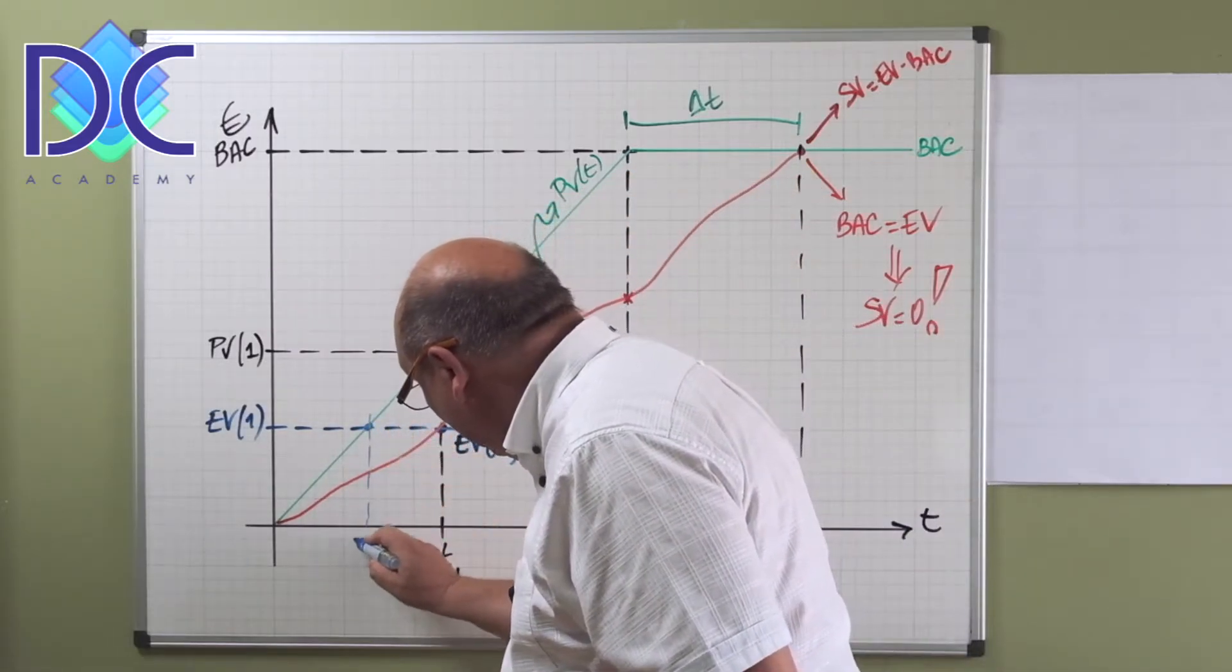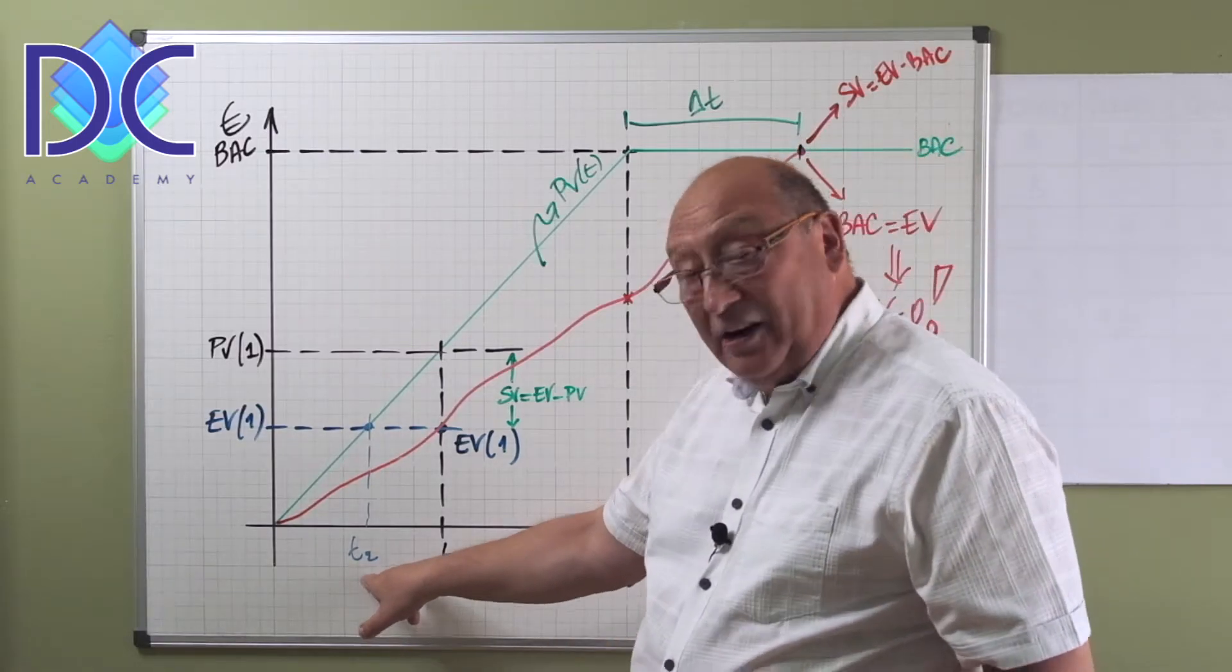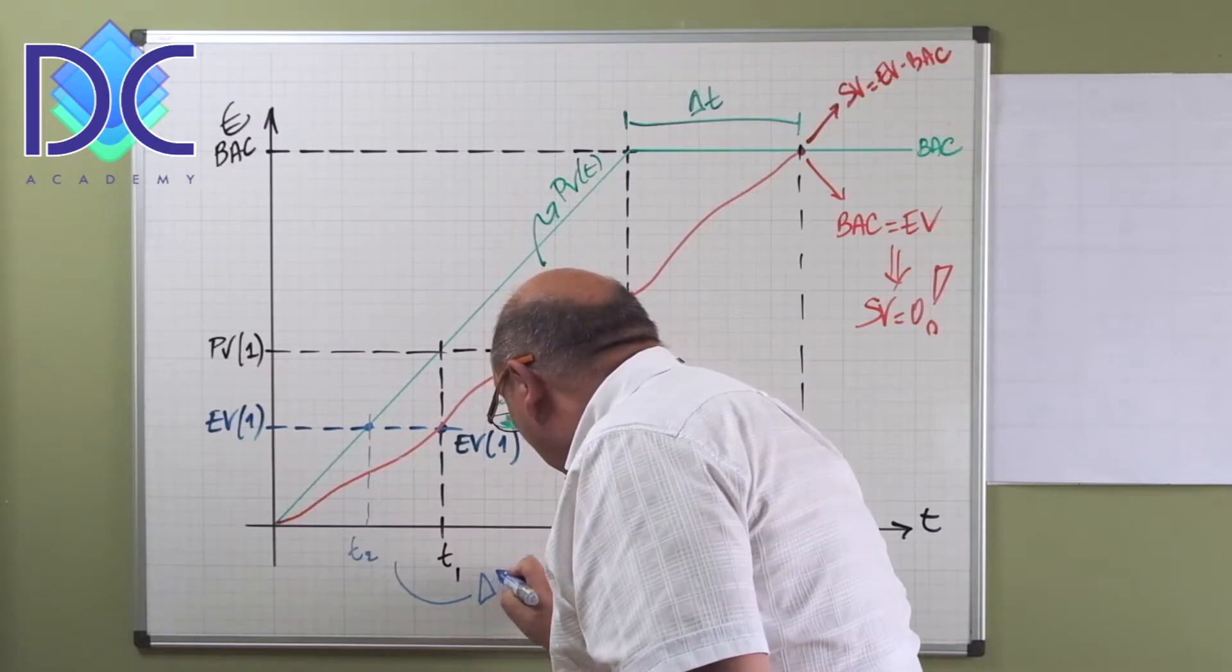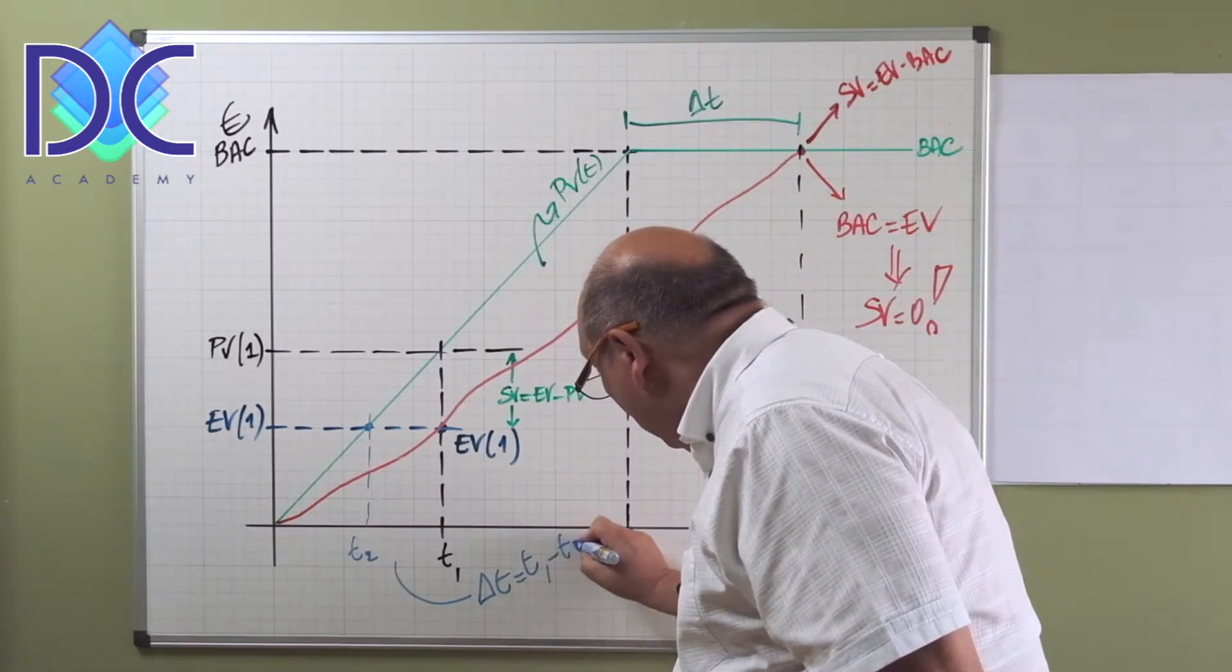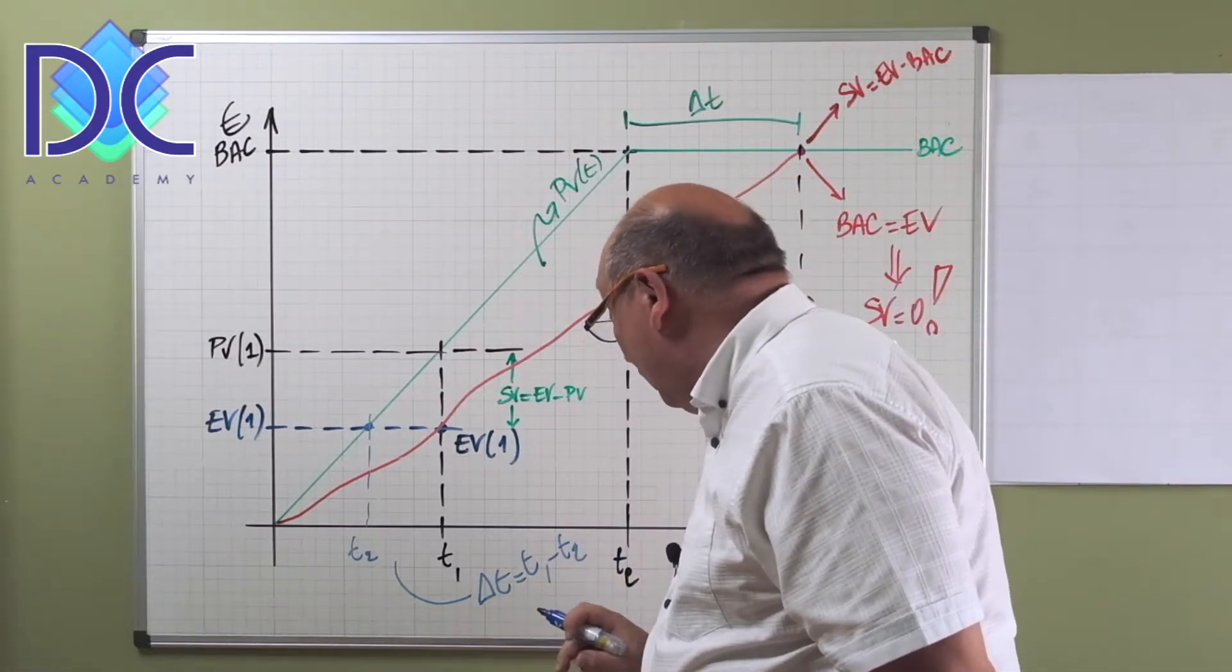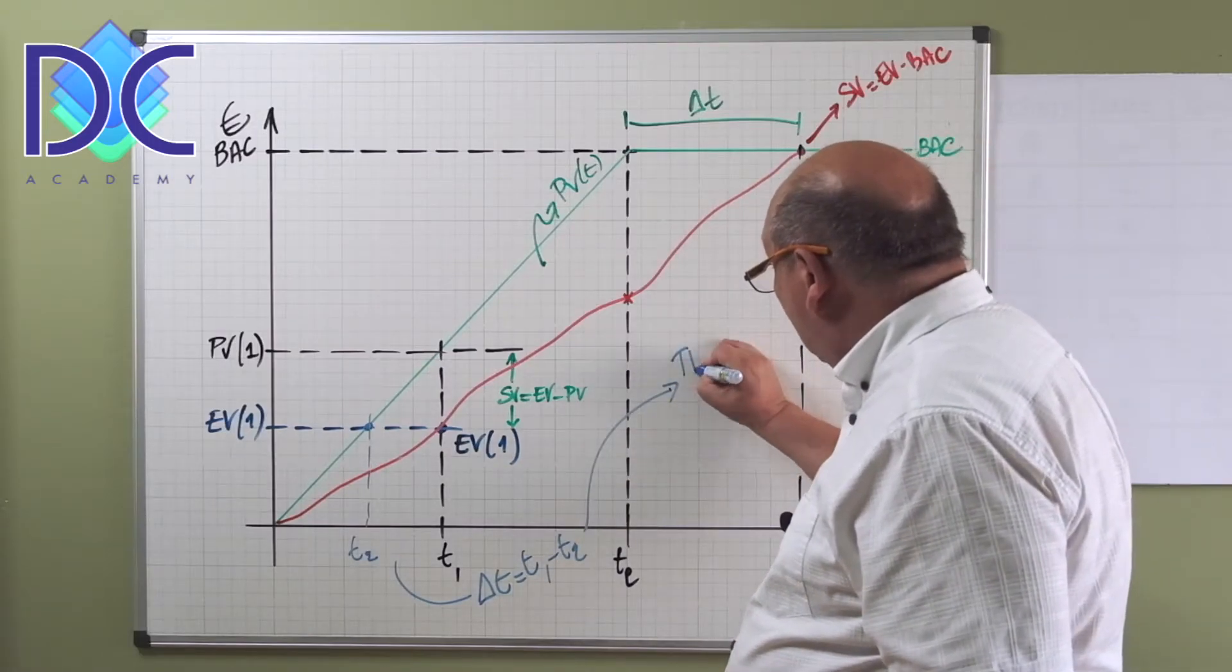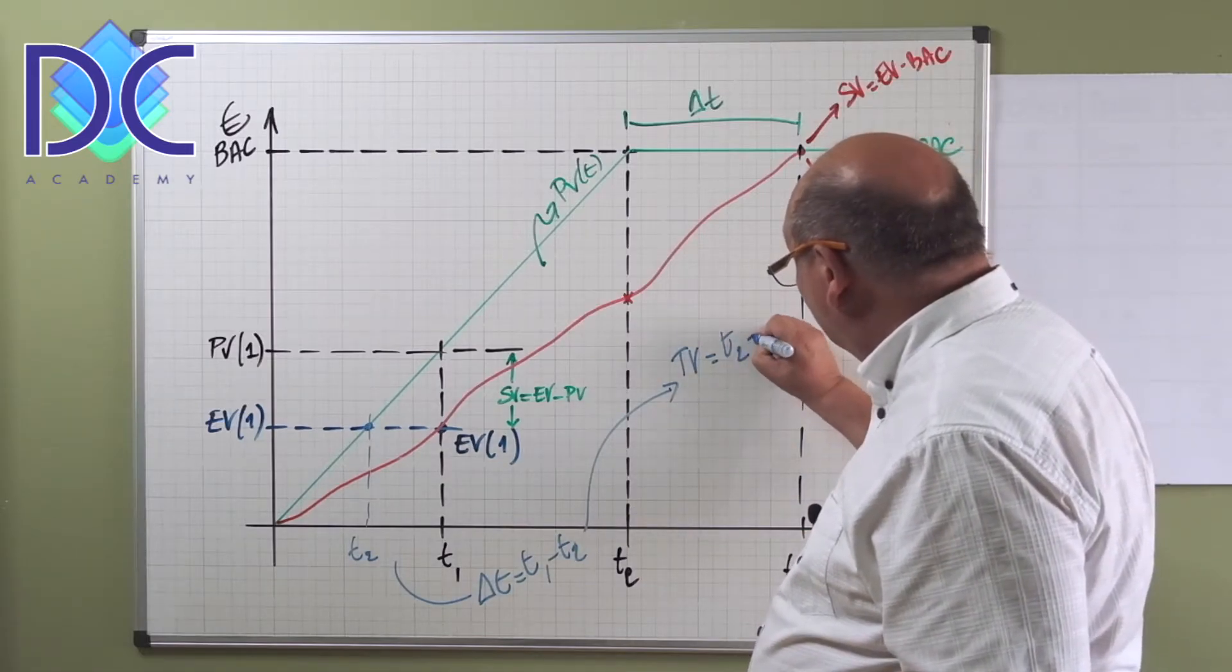Let's have a look. We earn the value at t1, but we should have earned the value here, which means let's call this t2. t2, which means we are late. We have a delta time here, delta time, which is t1 minus t2.